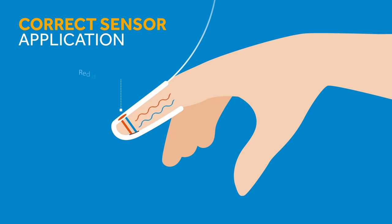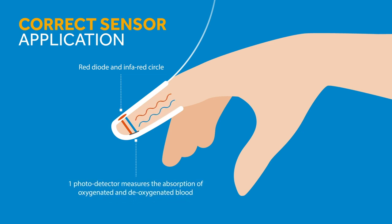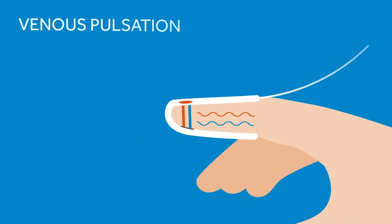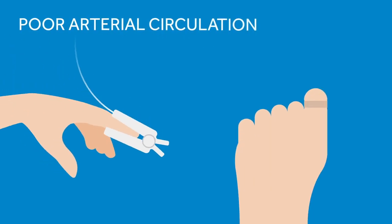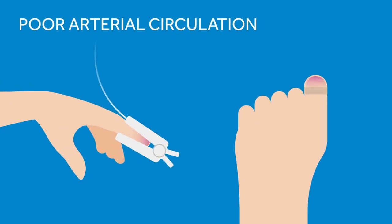SpO2 is calculated by measuring the absorption of light from an LED source which passes through the nail bed and is received by a photodetector. It is important that the photodetector is placed directly opposite the LED to ensure optimal readings. Check the sensor site regularly for skin integrity and to ensure the sensor is not too tight, otherwise it will cause venous pulsation which will give inaccurate readings.